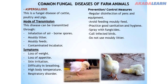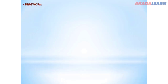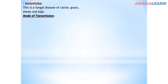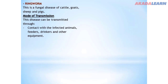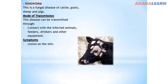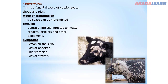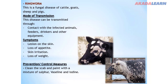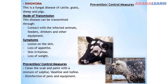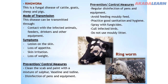The next fungal disease is ringworm. This is a fungal disease of cattle, goats, sheep, and pigs. Mode of transmission: contact with infected animals, feeders, drinkers, and other equipment. Symptoms: lesions on the skin, loss of appetite, skin irritation, and loss of weight. Prevention and control: clean the scar and paint with a mixture of sulfur, vaccine, and iodine; and disinfect pens and equipment.